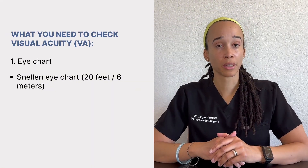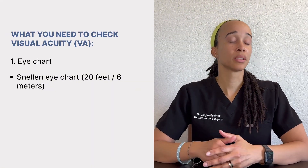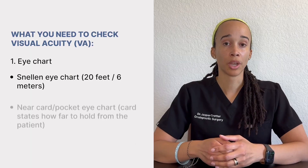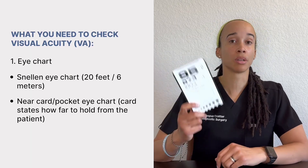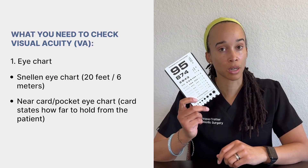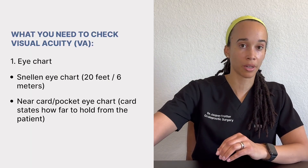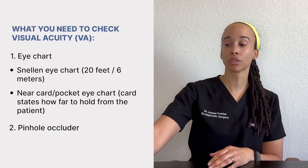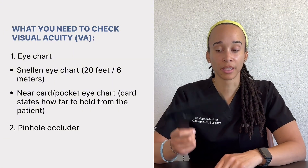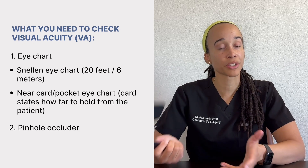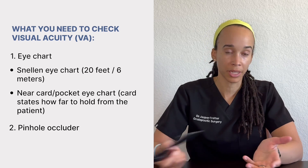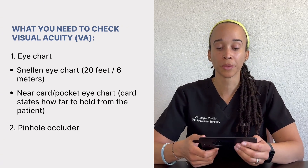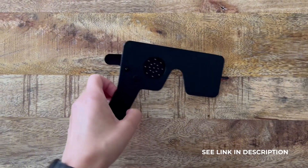What do you need to check visual acuity? Commonly this is going to be a Snellen eye chart, which helps to check distance vision. You can also check near vision by using a near card, also called a pocket eye chart. The second helpful thing to have is a pinhole occluder — you may see these at eye clinics, but they're really helpful to have, especially if you see urgent patients or you're in the primary care setting.